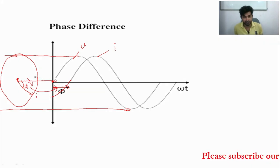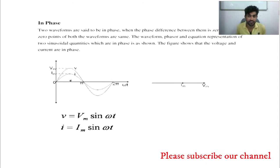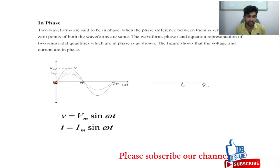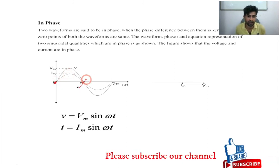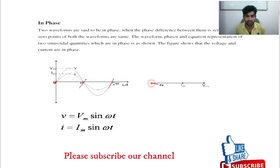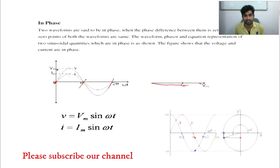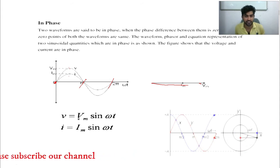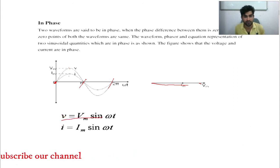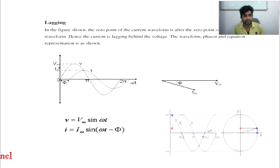Next is in-phase: both voltage and current are in phase with each other. They both start at zero, cross zero, and end at zero, so there is no phase angle. Im and Vm are in phase. The equations are v = Vm·cos(ωt) and i = Im·cos(ωt). This applies to a resistive load.